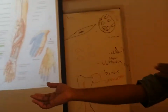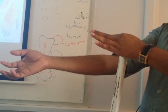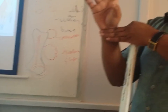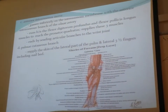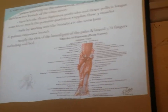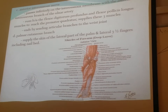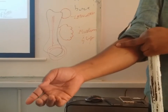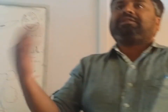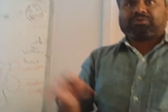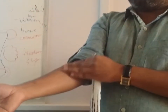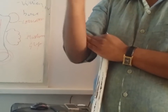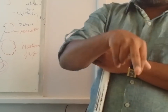The median nerve gives no branches in the arm — very few branches to the elbow joint — and then all branches in the forearm and hand. One branch in the forearm is the anterior interosseous nerve, which runs with the anterior interosseous artery to supply the deeper muscles of the front of the forearm. It is still referred to as the median nerve.